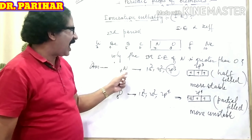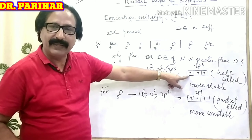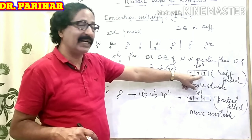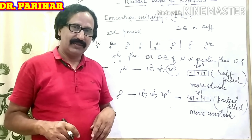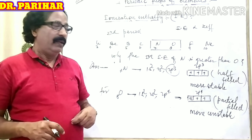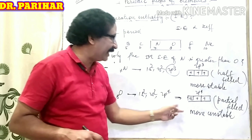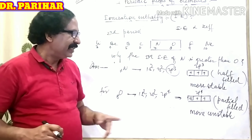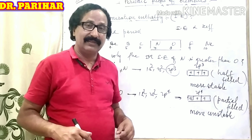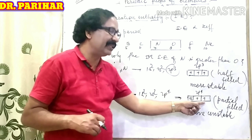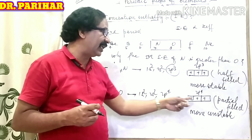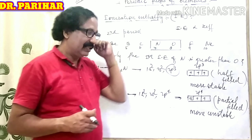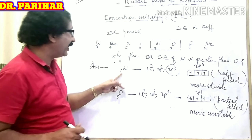Now the reason is clear. Since the outermost sub-shell of nitrogen is present in the half-filled state, it is more stable. Ultimately, we require more amount of energy to withdraw one electron from its outermost p sub-shell. So its first ionization enthalpy must be higher. In the case of oxygen, it is in partial-filled state — neither half-filled nor full-filled — so it is more unstable. Being more unstable, it is easy to withdraw one electron from its outermost shell, meaning we can withdraw one electron by supplying a small amount of energy. That is why the first ionization enthalpy of nitrogen is greater than oxygen.